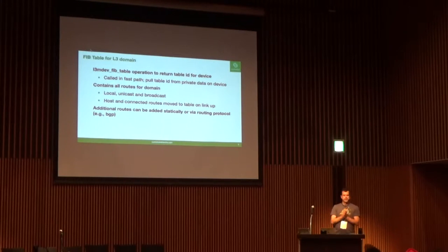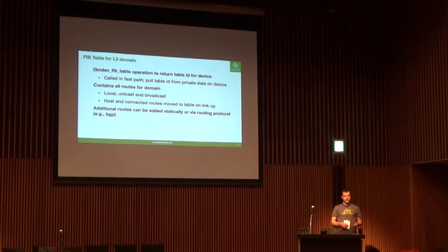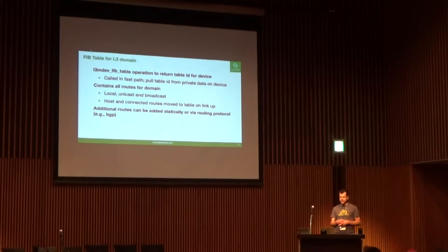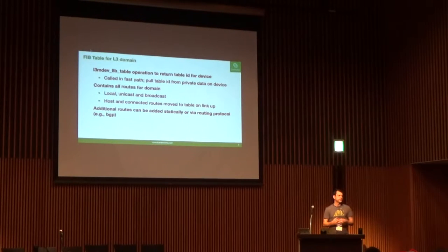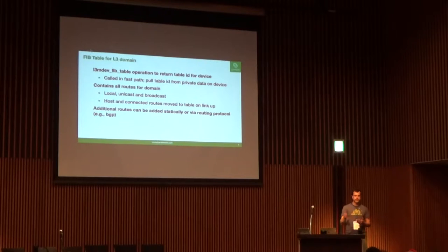The primary motivation here is FIB tables. One of the operations is the L3 MDEV FIB table operation to return the table ID associated with that L3 MDEV device. It's called in the fast path, and since this table ID is local to a device, you have to call an operation to do it — so you really want to store that in private data on the device. The FIB table associated with that L3 MDEV is expected to contain all routes: host routes, local routes, unicast routes, broadcast routes — all of it.